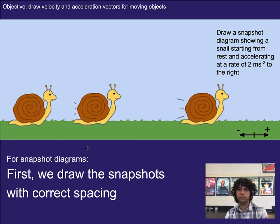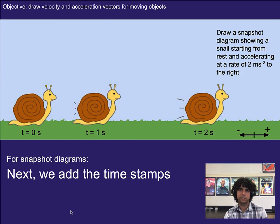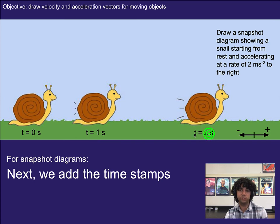First things first — if we're doing a snapshot diagram, we want to go ahead and draw in our snapshots with the correct spacing. We're showing that the spacing of the snail is increasing because we know it is accelerating. Next, we want to add in our timestamps. We always start with a time of zero, then the first snapshot at one second, the second at two seconds. The timestamps could be at different intervals, but it doesn't really matter unless specified. I like to choose one-second timestamps because it makes everything a little bit easier.